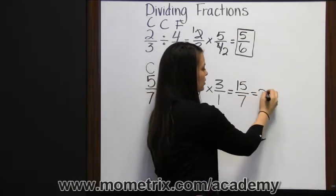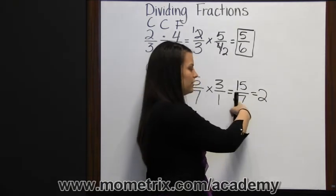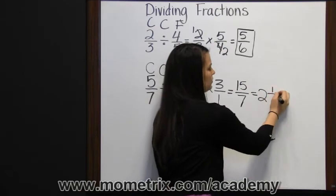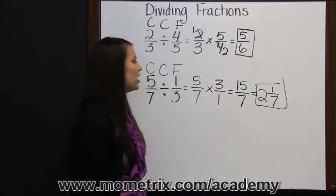Seven goes into fifteen two times, that would be fourteen, with one left over, over our denominator of seven. Two and one-seventh.